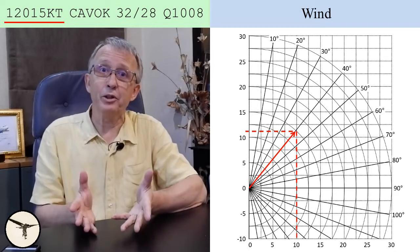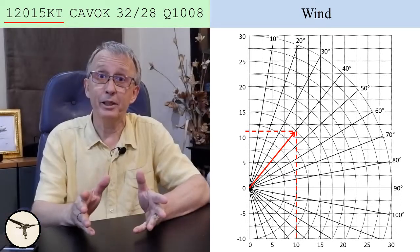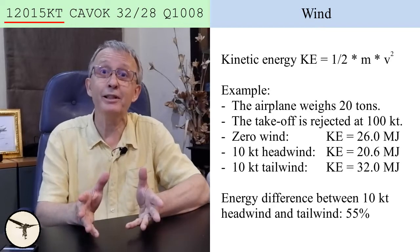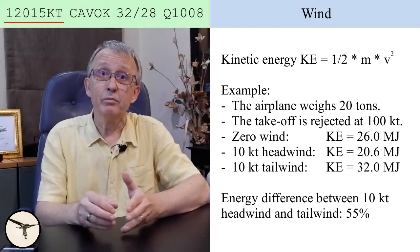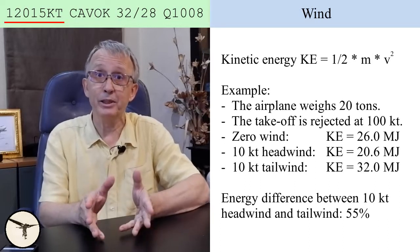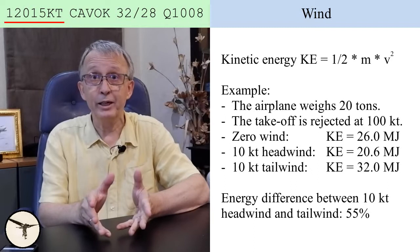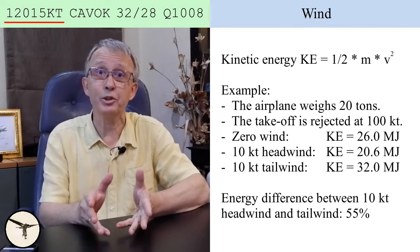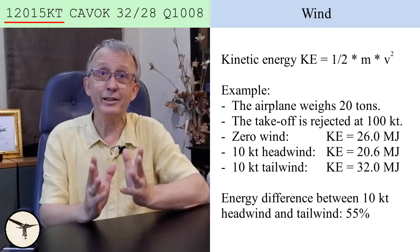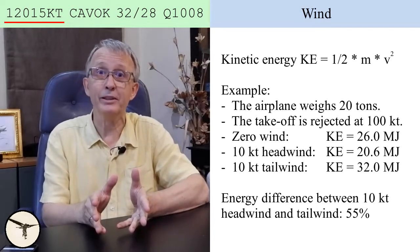Headwind is always a benefit because it gives you a head start. But sometimes you have no option and must depart in tailwind. Does a little tailwind make a difference? Oh yes it does. Because when you have to abort a takeoff, the brakes have to absorb all the kinetic energy. In this example, the airplane weighs 20 tons and the takeoff is aborted at 100 knots. In zero wind, ground speed is 100 knots and kinetic energy is 26.0 megajoule. With 10 knots headwind, ground speed is 90 knots and kinetic energy is 20.6 megajoule. With 10 knots tailwind, ground speed is 110 knots and kinetic energy is 32.0 megajoule — that is 55% more than with headwind.